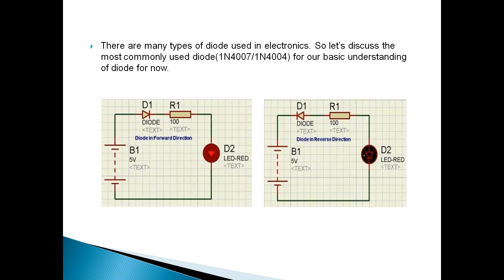How do we use the diode in our circuits? If we use the diode and the positive terminal of the diode is connected to our battery, it means the diode is in forward bias. In the other case, if the negative terminal of the diode is connected to the positive of the battery, then the diode is in reverse bias. It will not pass the current and the LED will not glow. This is our simple basic circuit.